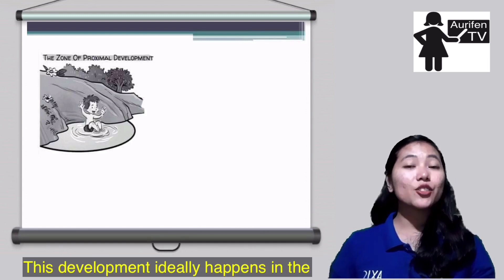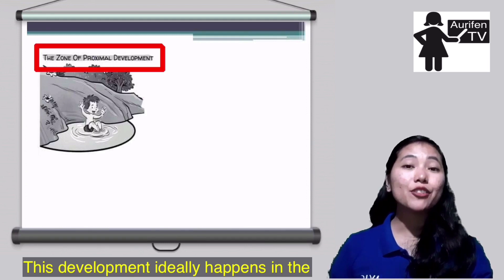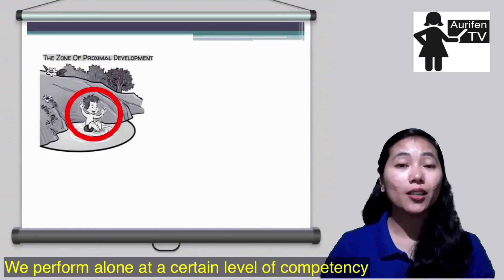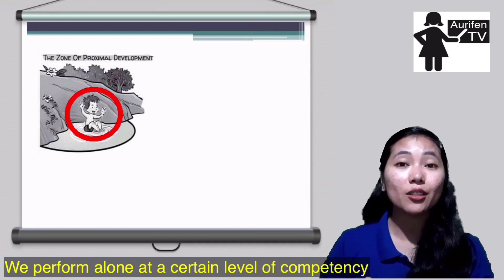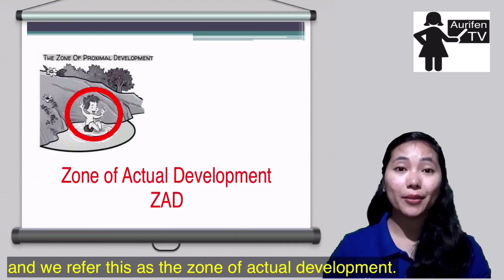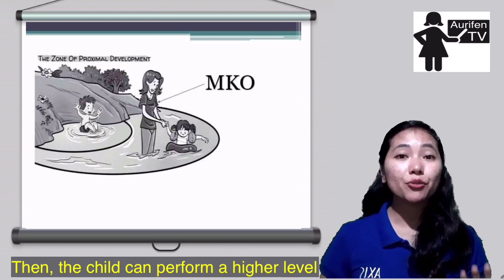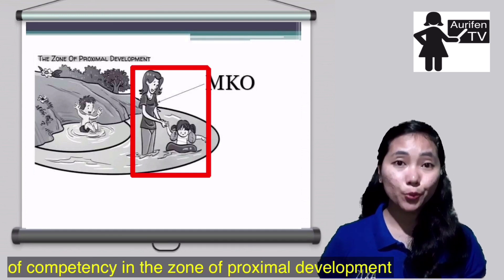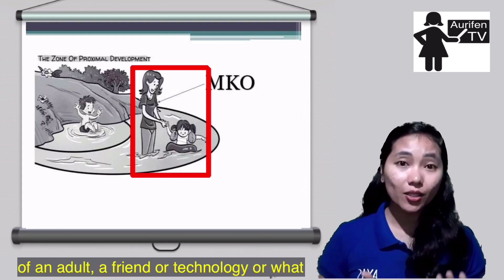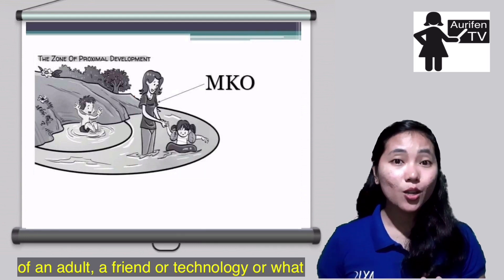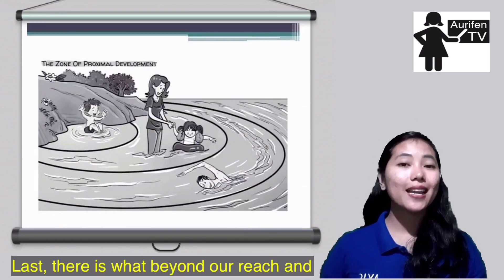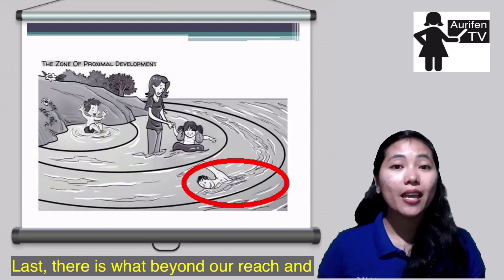When the child develops and gains higher mental function, this development ideally happens in the zone of proximal development. First, there is what we can do on our own — we perform alone at a certain level of competency, referred to as the zone of actual development. Then the child can perform at a higher level of competency in the zone of proximal development, which represents what we can do with the help of an adult, a friend, technology, or what Vygotsky called the More Knowledgeable Other (MKO). Lastly, there is what is beyond our reach, which we cannot do even with the help of others.